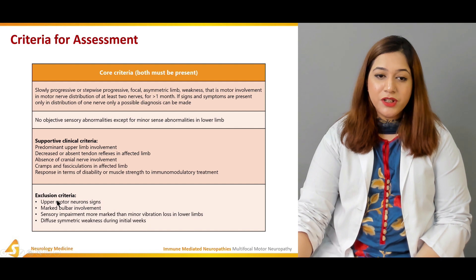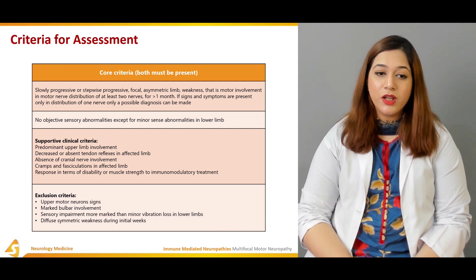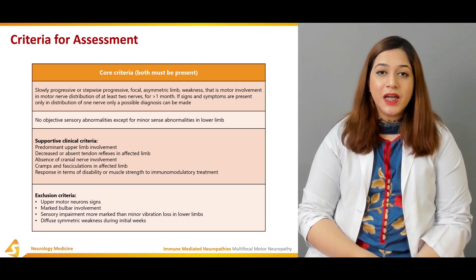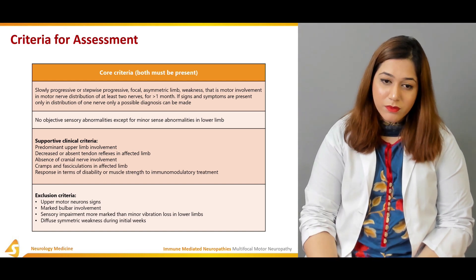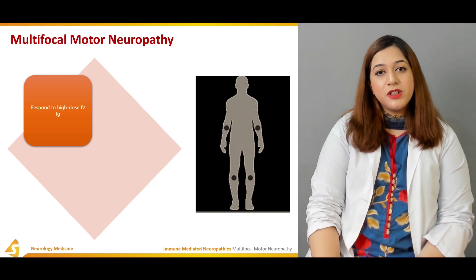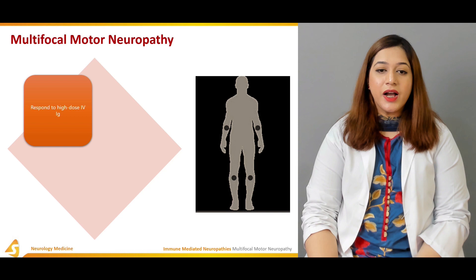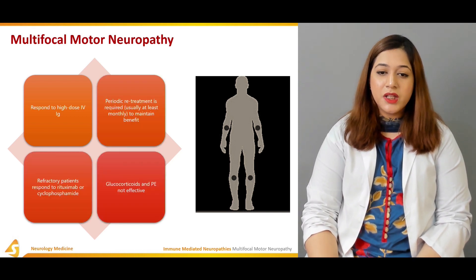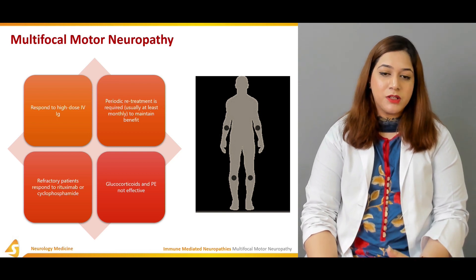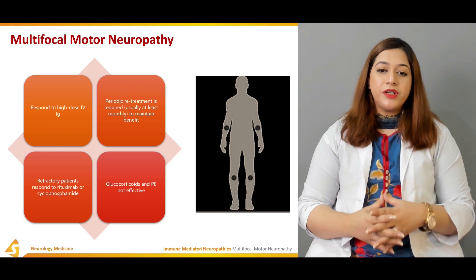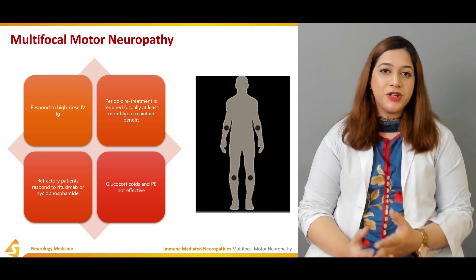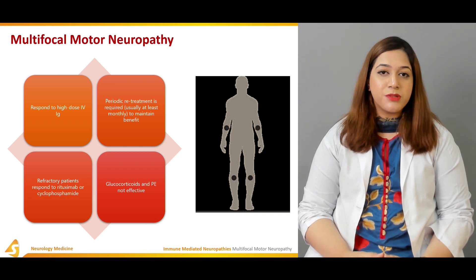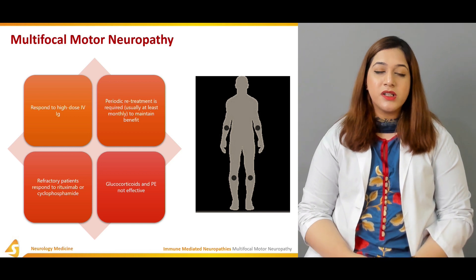The minimal criteria for diagnosis requires fulfillment of the core clinical criteria, all exclusion criteria, and normal sensory nerve conduction studies in the distribution of affected motor nerves. Regarding treatment, multifocal motor neuropathy usually responds to high-dose intravenous immunoglobulins, but there is no response to glucocorticoids or plasma exchange. Periodic retreatment is required at least monthly to maintain benefit. For refractory patients, immunosuppressive agents such as rituximab or cyclophosphamide can be used.